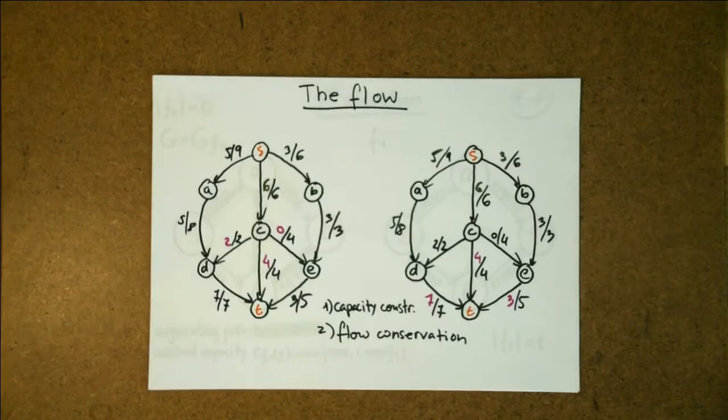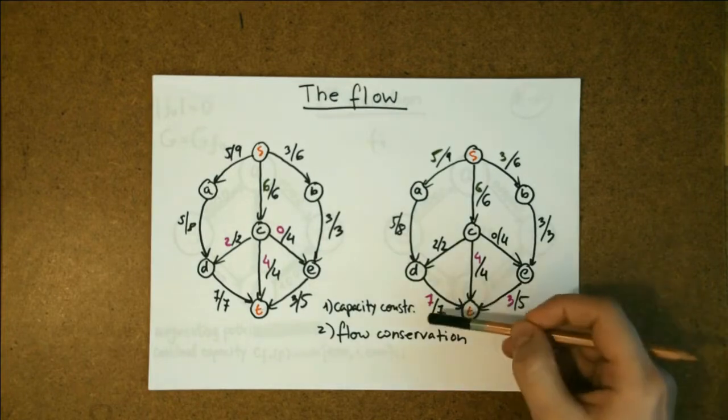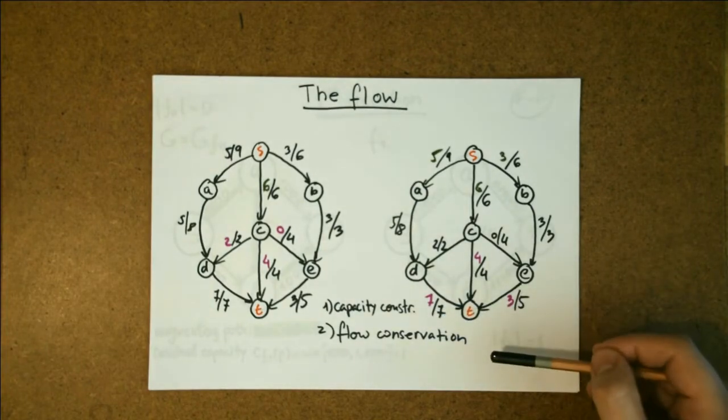A flow in a flow network is a positive real valued function that satisfies two important properties. One is capacity constraint and one is flow conservation.